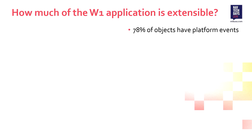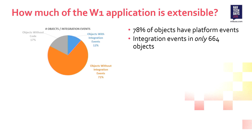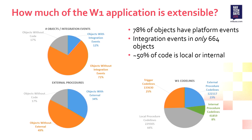So does this tell us how extensible the application is? Maybe not. 78% of objects have platform events, and 80% have CRUD events - on insert, on after, all those things. But integration events - those 2,700 events - are only in 664 objects, which is roughly 12% of objects. It doesn't look so good now. And 50% of our code is either local or internal, which means you can't access it. If you slice it by object, 50% of objects have nothing you can access, and in terms of code lines, half the code lines you can't access.